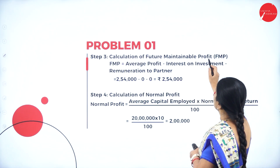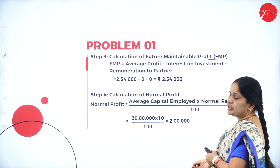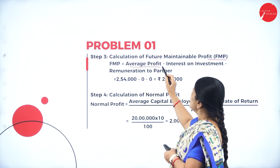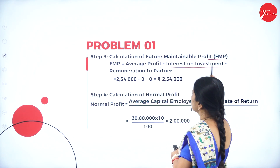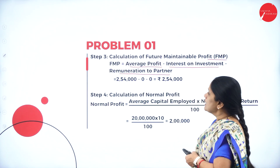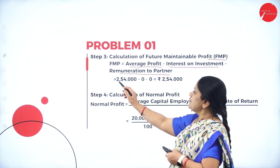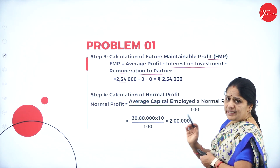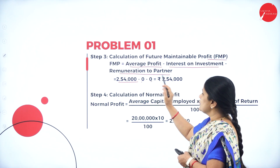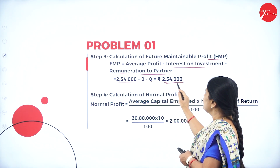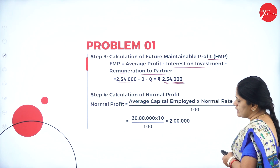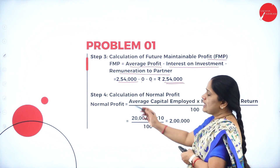Next step: calculation of future maintainable profit (FMP). FMP is average profit minus interest on investment minus remuneration to partners. The average profit is 2 lakhs 54,000. There is no interest on investment and no remuneration to partners, so both are taken as zero. The future maintainable profit remains 2 lakhs 54,000.